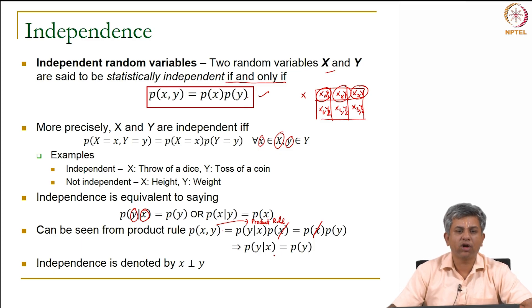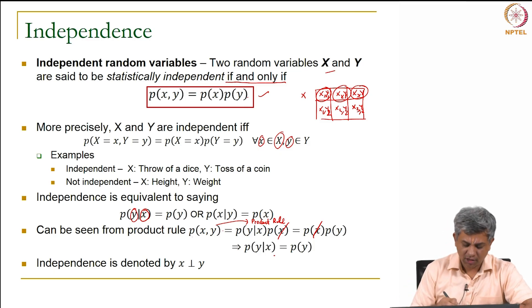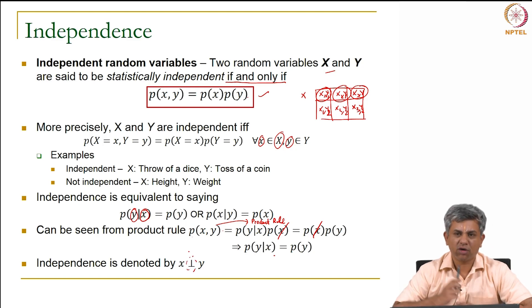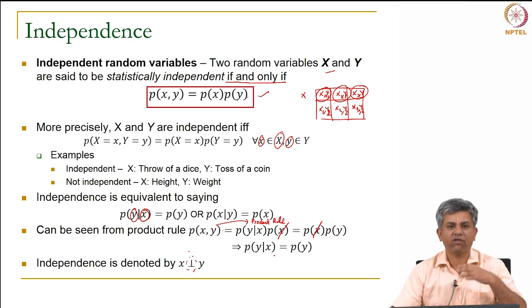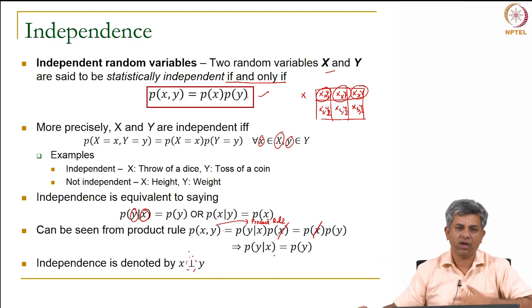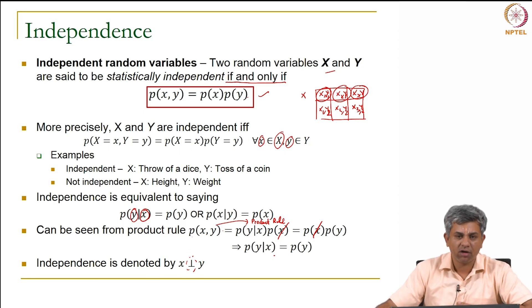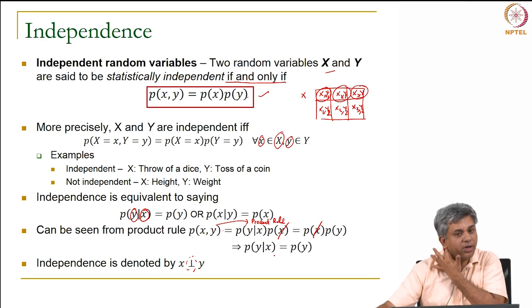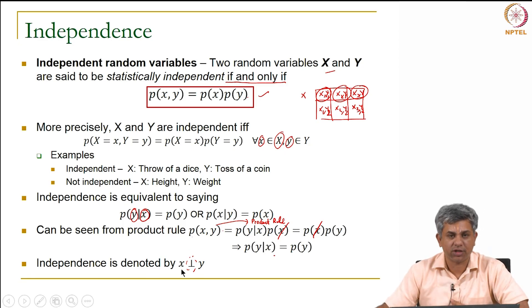Typically we denote independence using the notation X ⊥ Y — the perpendicular sign — because we take orthogonal variables as if they were independent variables. Please remember this notation.